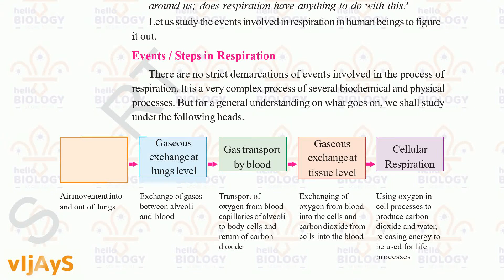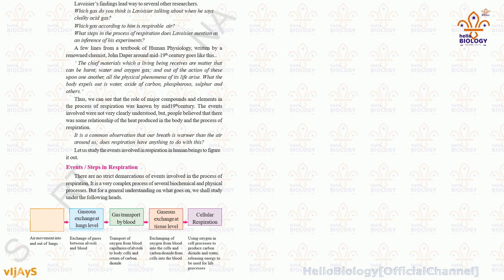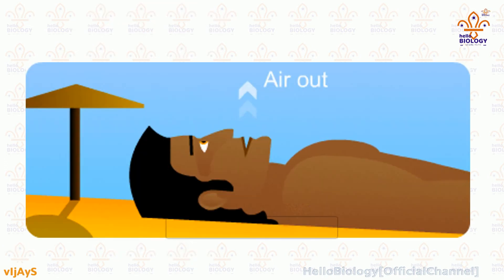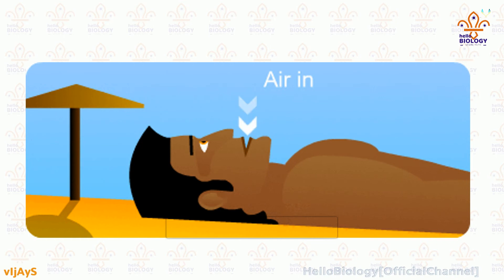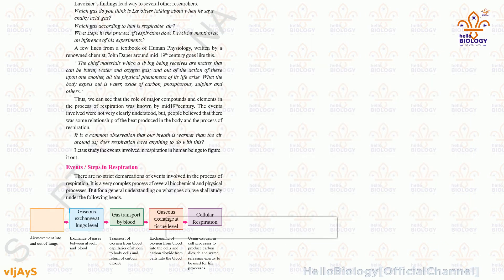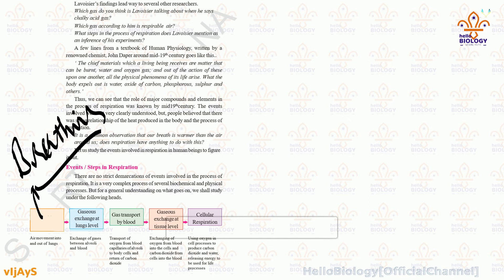This is about events and steps in respiration — a continuation of the second chapter, part 2. We will discuss different kinds of gases and the steps respiration takes. In respiration, air enters into our body and air exits. There are mainly five steps: breathing, gas exchange at the lungs level, gases transferred by blood, gas exchange at the tissue level, and cellular respiration. These steps are important for 10th class and will be asked in exams.